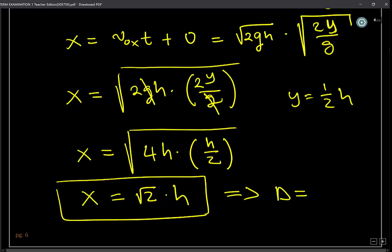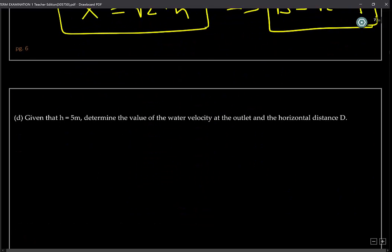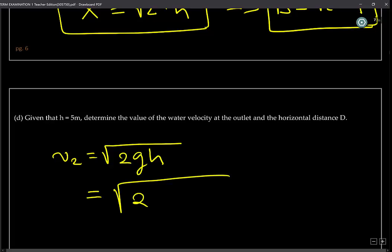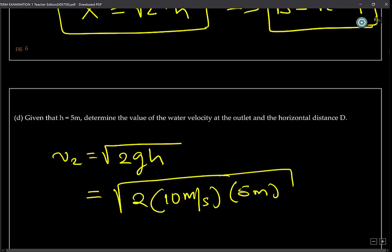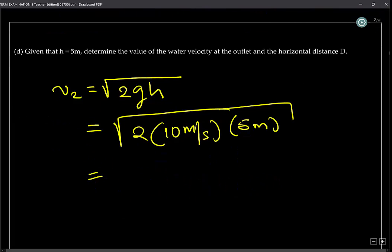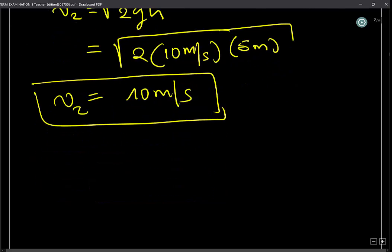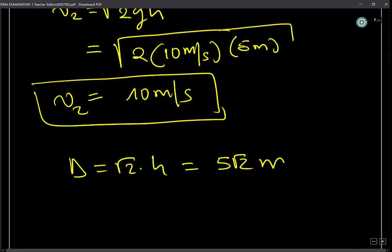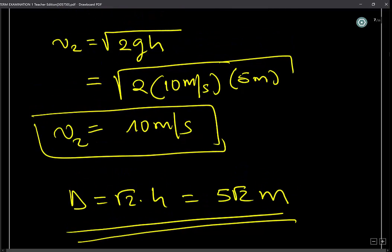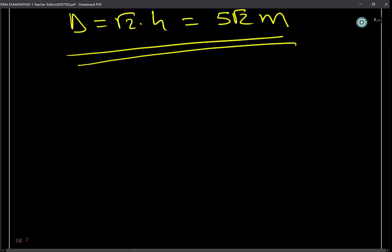This means that d equals root(2) times H. Now plugging in numerical values with g equal to 10 meters per second squared and h equal to 5 meters: v2 equals the square root of 2 times 10 times 5, giving us 10 meters per second. And d equals 5 root(2) meters. Thank you for your time. See you in the next problem.